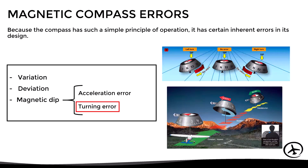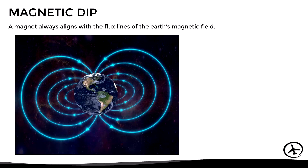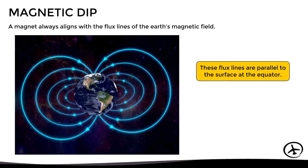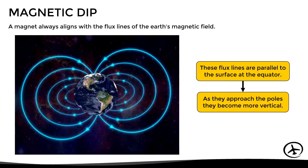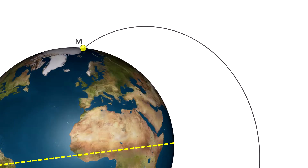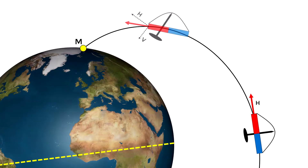In this video we will focus on the turning error, but first let's remember what magnetic dip is. A magnet always aligns with the flux lines of the earth's magnetic field. As we can see, these flux lines are parallel to the surface at the equator. At the equator, the magnetic force acting on the compass is completely horizontal, so the compass will rotate horizontally, giving the heading indication properly.